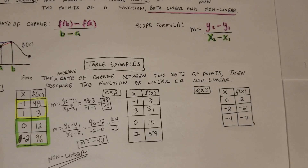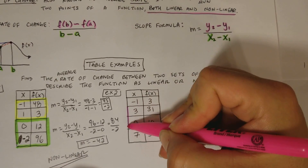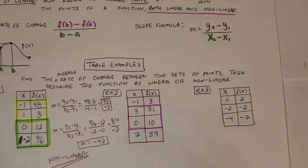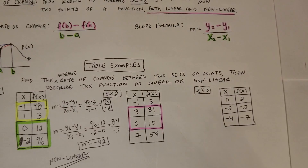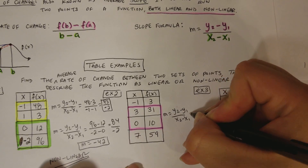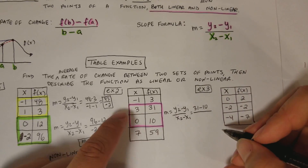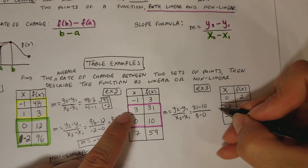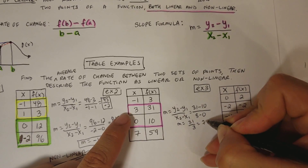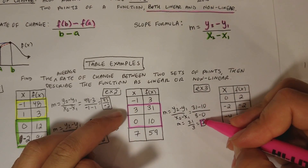Example number two. You can pick whichever two points you want — or if they tell you which ones to pick, use those. I'm going to pick these two points. The slope is y2 minus y1 over x2 minus x1, so 31 minus 10 over 3 minus 0. That gives 21 over 3, which equals 7.